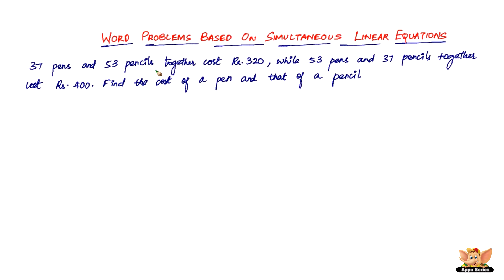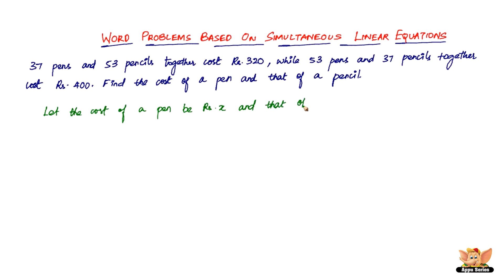Now how do we approach this problem? The pens and pencils are the variables — specifically, the cost of the pens and pencils. The number of pens and pencils in both cases are the constants, like a1, b1 and a2, b2, and the total rupees are c1 and c2. So let the cost of a pen be rupees x and that of a pencil be rupees y.